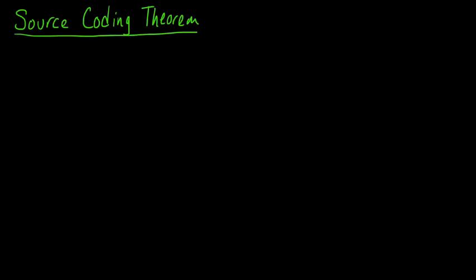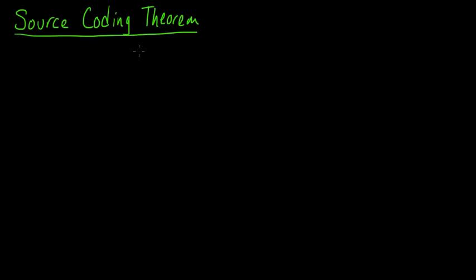At last, we are ready to reap the fruits of our labor and prove the source coding theorem, one of the three major theoretical results of information theory. The three being: the source coding theorem, which establishes the best possible compression achievable; the channel coding theorem, which establishes the best possible rate one can communicate across a noisy channel and still achieve arbitrarily low error; and the rate distortion theorem, which establishes the best possible rate for a given acceptable level of distortion.